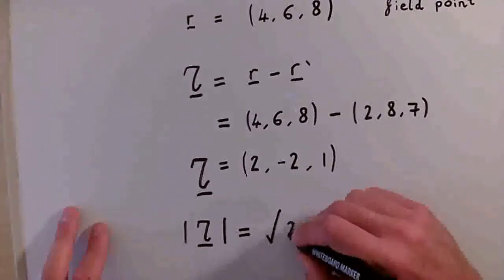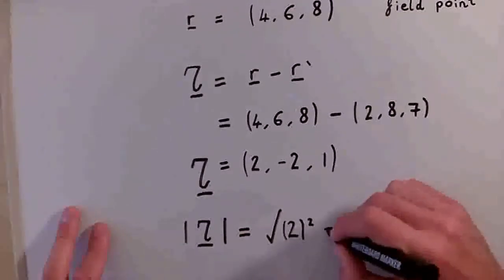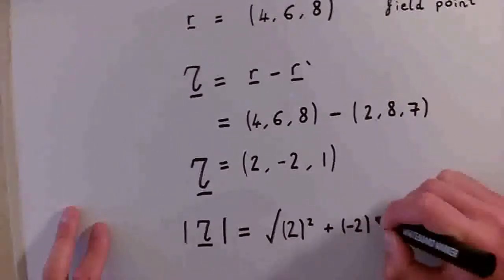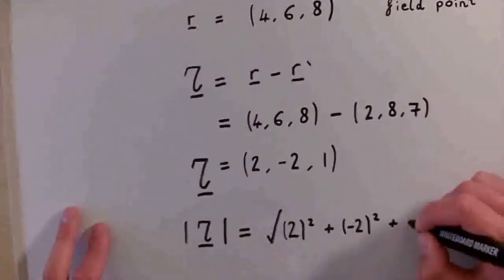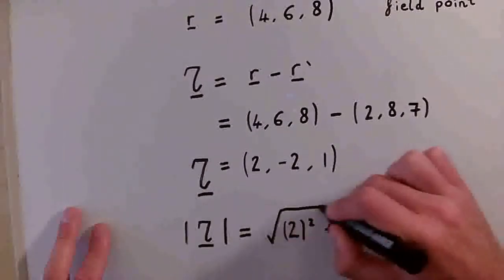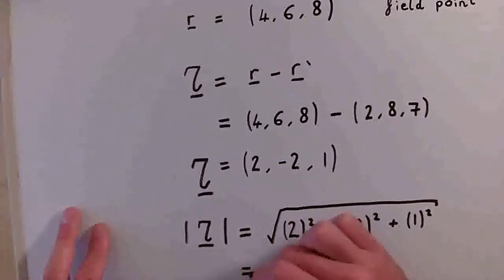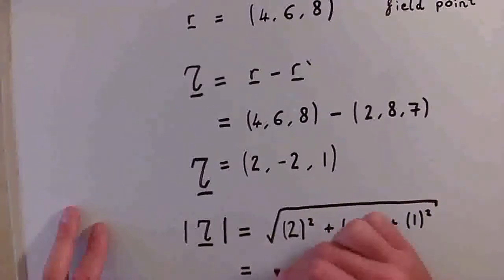So we have 2 squared plus minus 2 squared plus 1 squared, which is the square root of 9, which is 3.